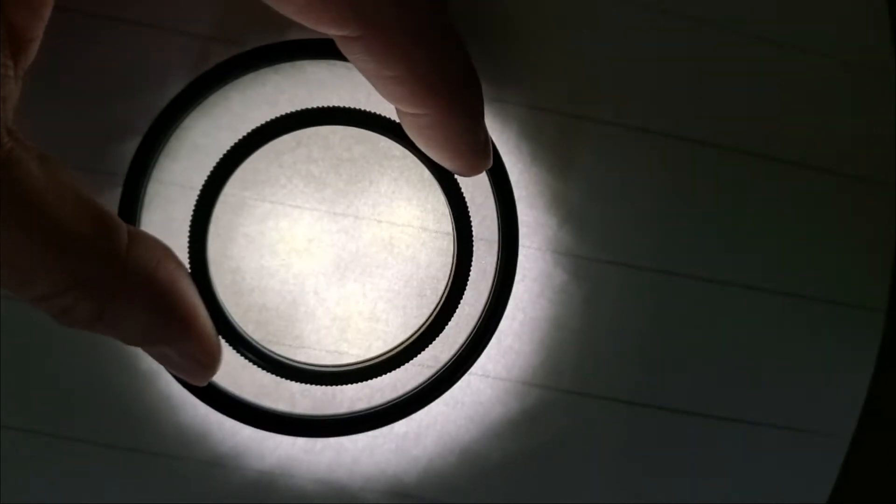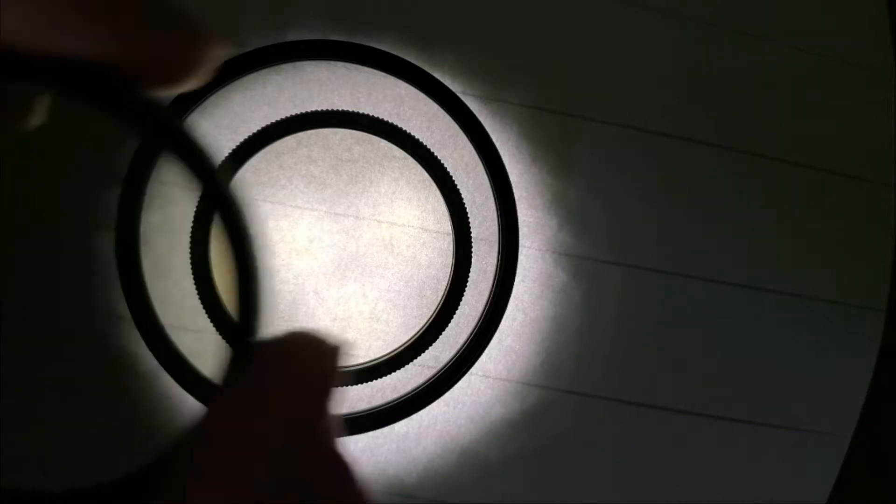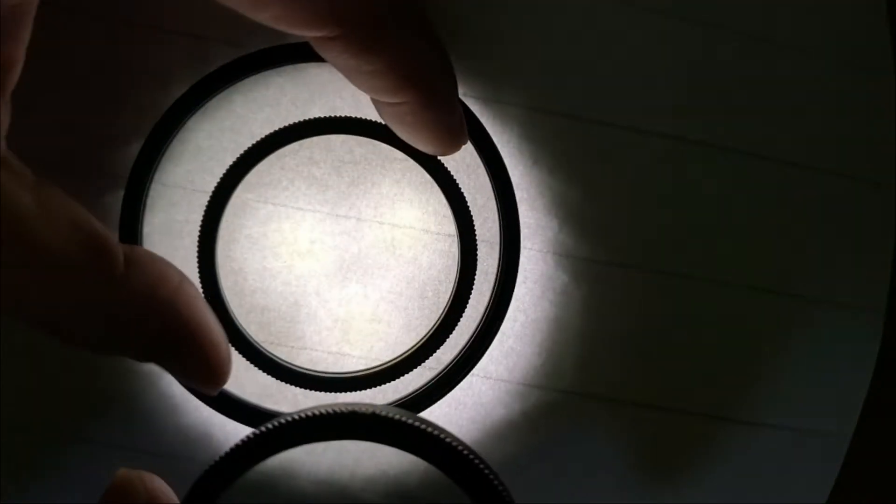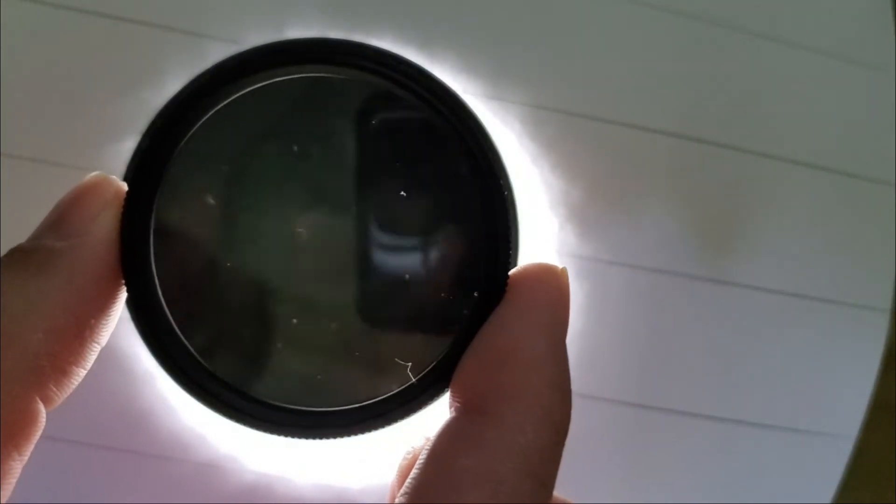This phenomenon that you see here is called the three polarizer paradox. Basically what happens is you take two polarizers that are oriented 90 degrees apart, and you see nothing but black.